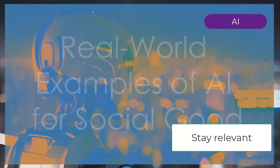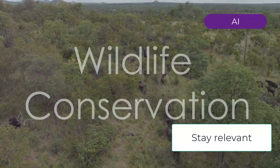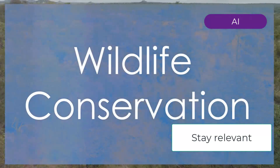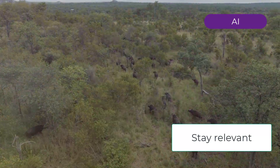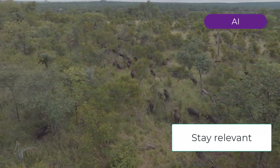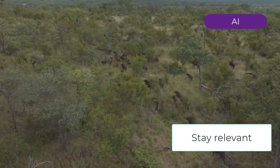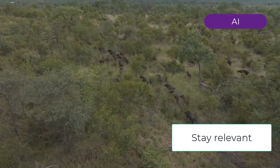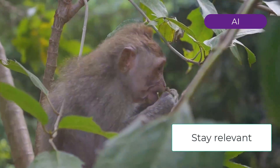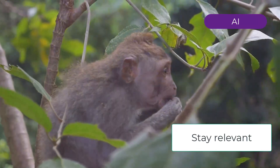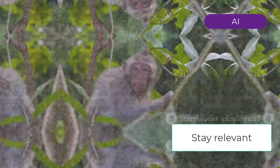In real-world examples of AI for social good, wildlife conservation stands out. AI helps in monitoring and protecting endangered species — for instance, Wildbook uses AI and machine learning to identify and track individual animals in the wild using photos and videos, aiding in conservation efforts.